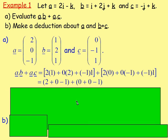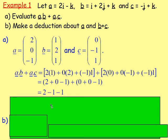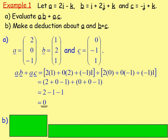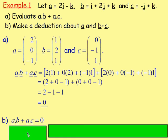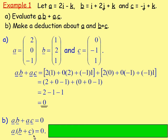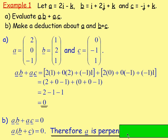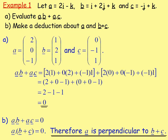Be very careful with all the brackets. That gives 2 + 0 − 1 for A dot B, and then adding A dot C: 0 + 0 − 1. Which becomes 2 − 1 − 1 = 0. Part B: make a deduction about A and (B + C). Since A dot B plus A dot C equals 0, we can factorize to get A dot (B + C) = 0. When a dot product equals zero, the two vectors are perpendicular. Therefore, vector A is perpendicular to (B + C).